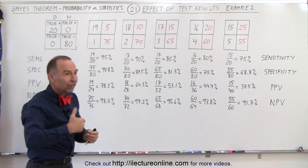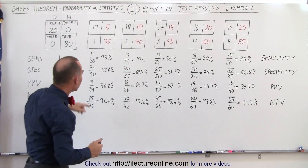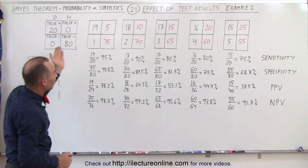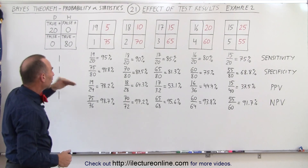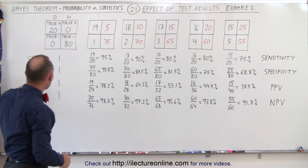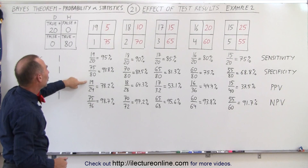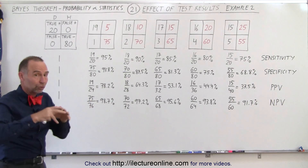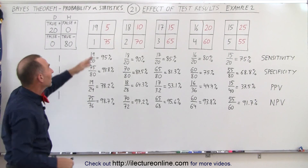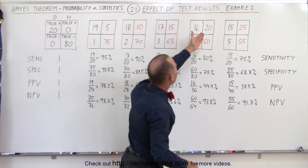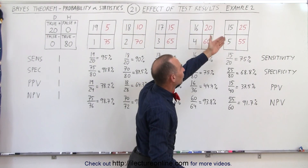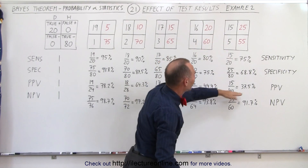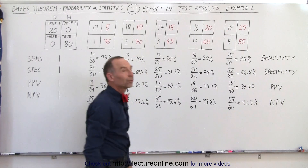If your test has a lot of false positives, the positive predictive value drops quite quickly, because the positive predictive value is the ratio of the true positives divided by the total positives. The total positives grows quite quickly if there are a lot of false positives. And eventually, if the number of false positives is greater than the number of true positives, then your positive predictive value drops below 50% — which is exactly what we see here.